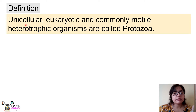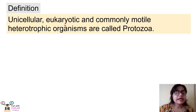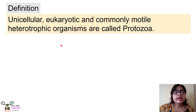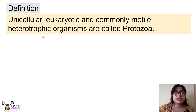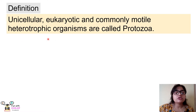Next, protozoans are eukaryotes — they are not a primitive type; they have a well-defined nucleus. These protozoans are also motile, meaning they can move from one place to another. Another point is that protozoans are heterotrophic organisms, meaning they have different types of eating behavior. Combining all these characters, the definition is: protozoans are unicellular, eukaryotic, commonly motile, heterotrophic organisms.